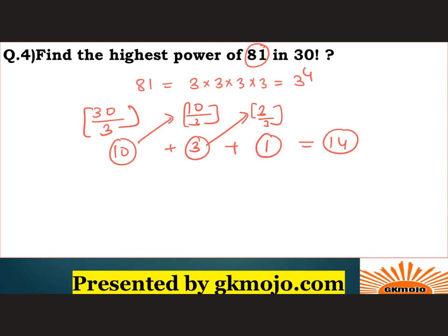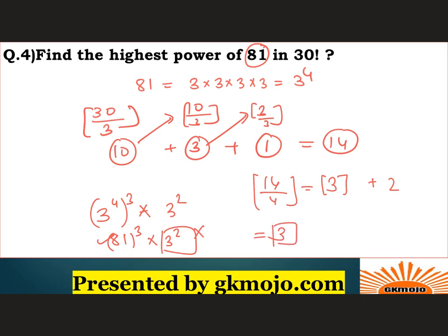Now what do we do? Take this 14 and divide by 4, which is the power of 3. What will we get? We'll get 3 as the quotient and 2 as remainder. So what is this? It will be of the form 3 to the power 4, into 3, into 3 square. What is this 3 to the power 4? It is 81 cube into 3 square. This 3 square is useless for us, we only need the highest power of 81. So what is the highest power of 81? It is equal to 3.